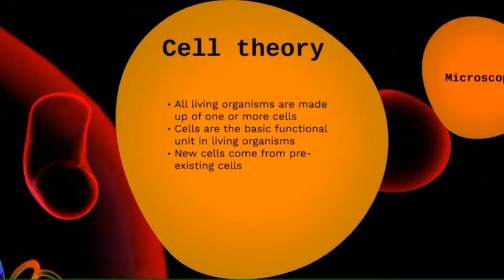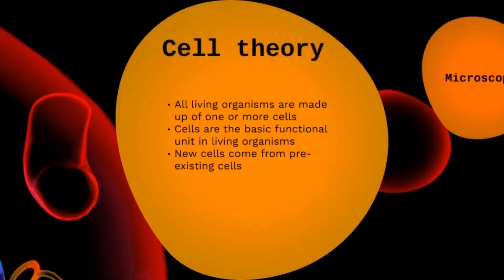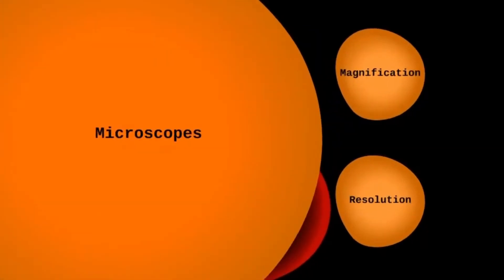It's really important that you understand the concept of the cell theory, but you don't need to necessarily remember the names of the scientists or the dates. Microscopes are tools that we can use in order to see cells and structures of tissues and organs. There are two types of microscope you need to know about: light microscopes, which are the ones you've probably seen before in the lab or on TV, and electron microscopes, which are a bit more complex but allow for higher magnifications.